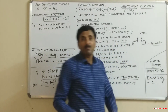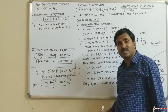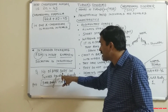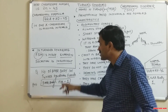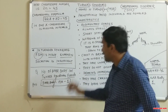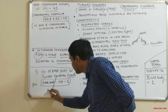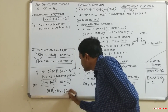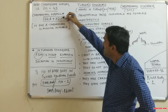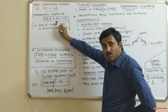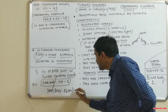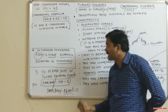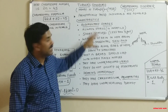In a female suffering from Turner syndrome, since one X chromosome is missing, the total number of X chromosomes is 1. Therefore, Barr body = 1 − 1 = 0. So in a Turner syndrome female, Barr bodies are absent — no Barr body is present.